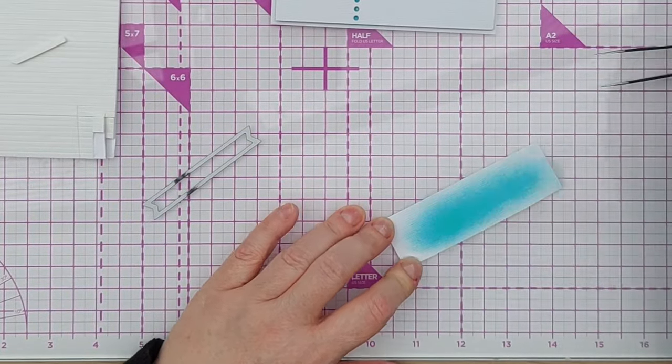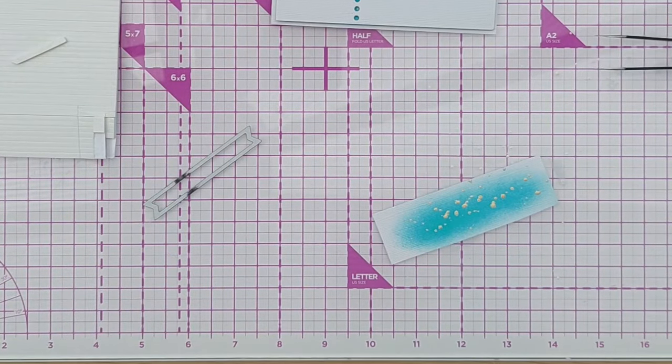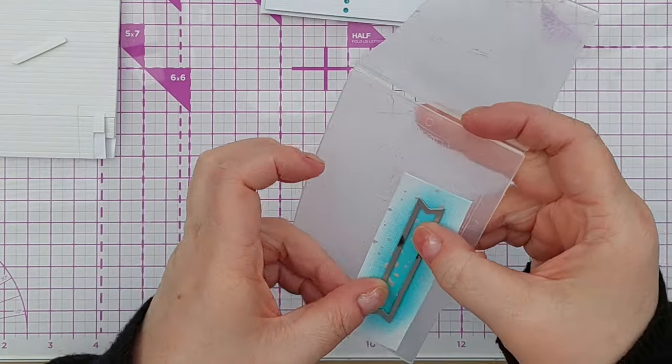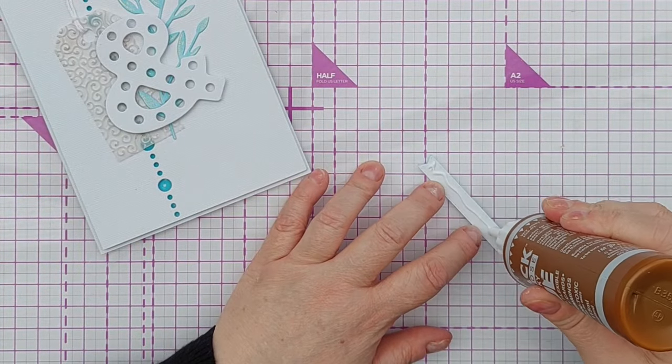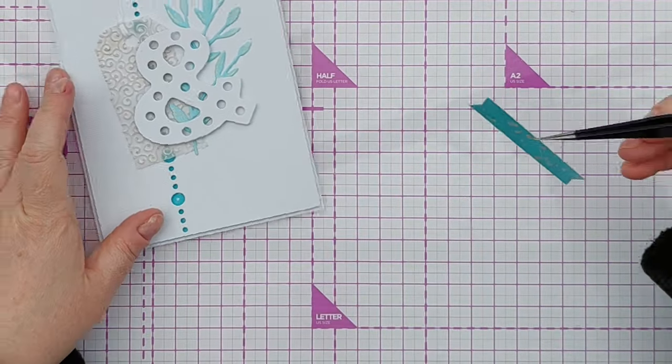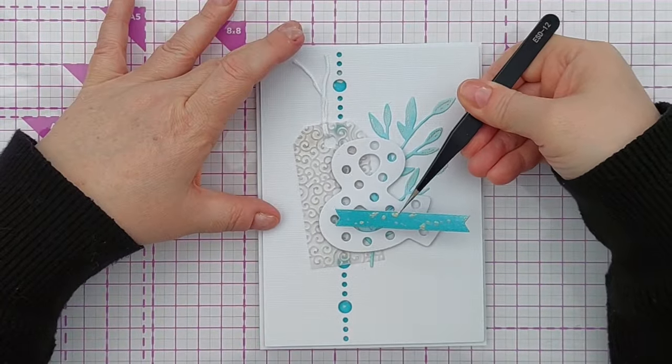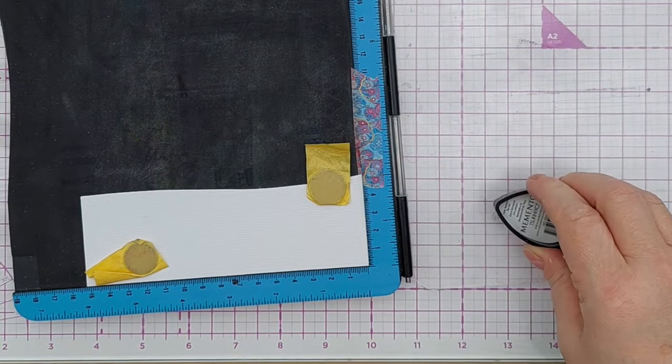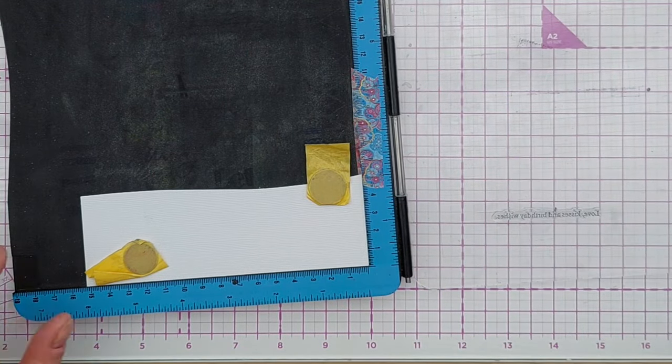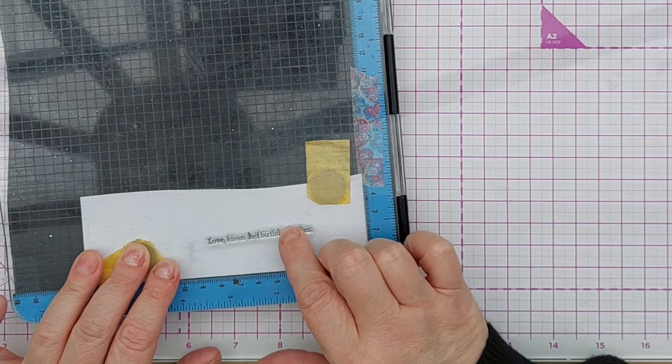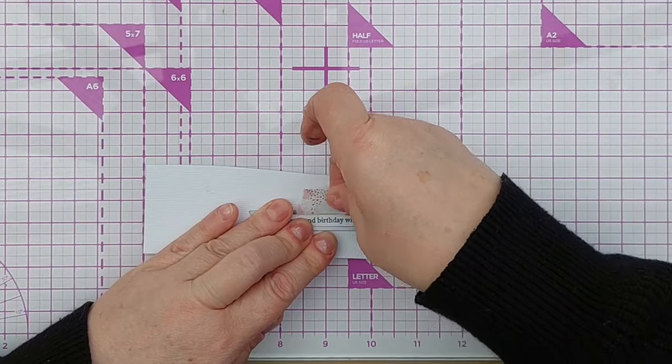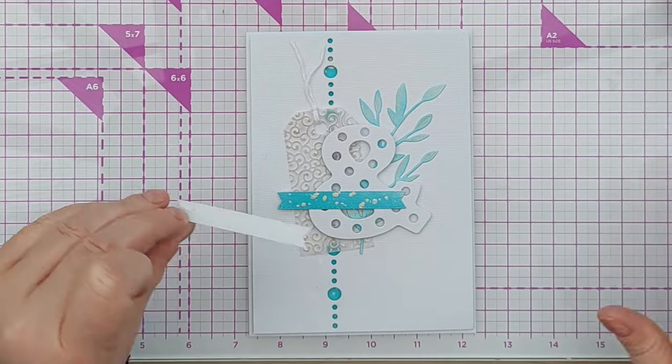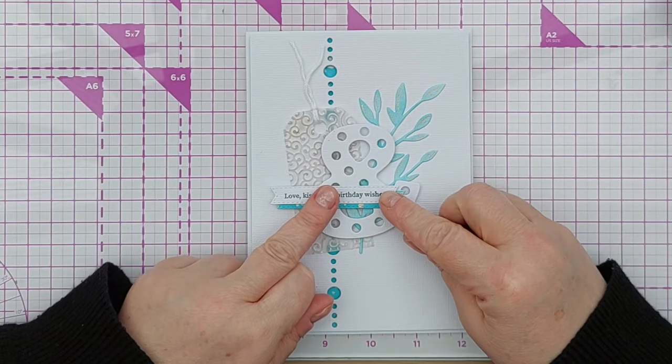For my sentiment I wanted to stamp something on a banner but I didn't just want a plain white banner I wanted to have a coloured banner behind my sentiment banner. So I coloured a bit of card with the ink that was on my blending brush spattered on some more gold cut a banner from that piece of card and then added it with tacky glue to the left hand side of my card. Then I stamped my sentiment it says love kisses and birthday wishes and I stamped this in black and then cut it out with that same banner die which I then layered on top of the blue banner die that I'd already stuck down and the blue banner die acts like a bit of a drop shadow for my sentiment piece.